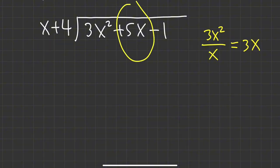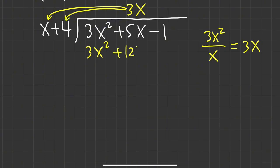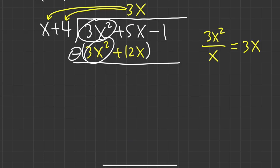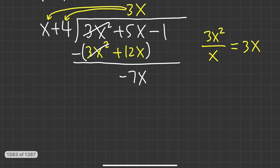Notice that this is the x column — we are going to line up and put 3x right above here. Now we take the 3x, multiply by x, which gives us 3x squared. Then 3x times 4 is 12x, so we write plus 12x. For long division, we are going to subtract, putting a subtraction with parentheses. The first term should always be 0 — 3x squared minus 3x squared is 0, so they cancel. Then 5 minus 12 is negative 7, so that's negative 7x. Then bring down the minus 1.